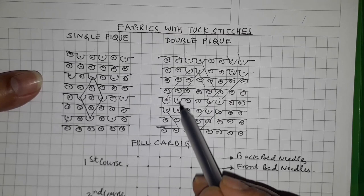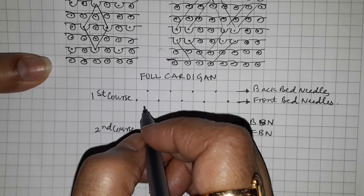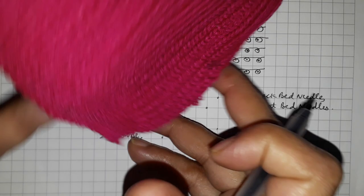Piqué structures are popular for this very fine diamond design. You can pick up any of your t-shirts and see this kind of design. Let's look at a full cardigan. This fabric also uses tuck stitches.